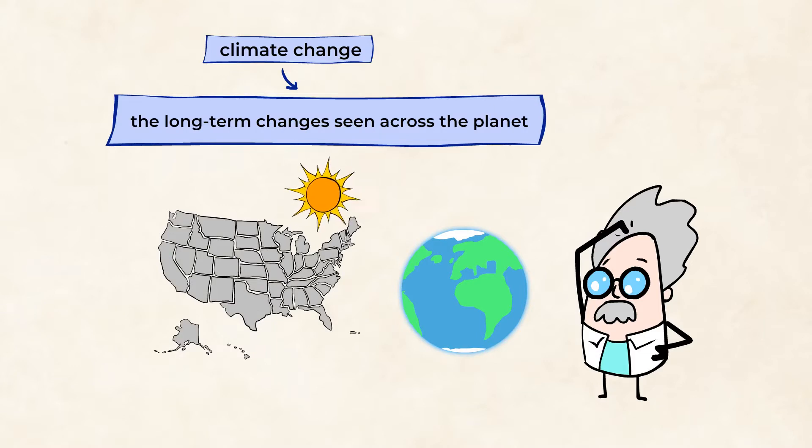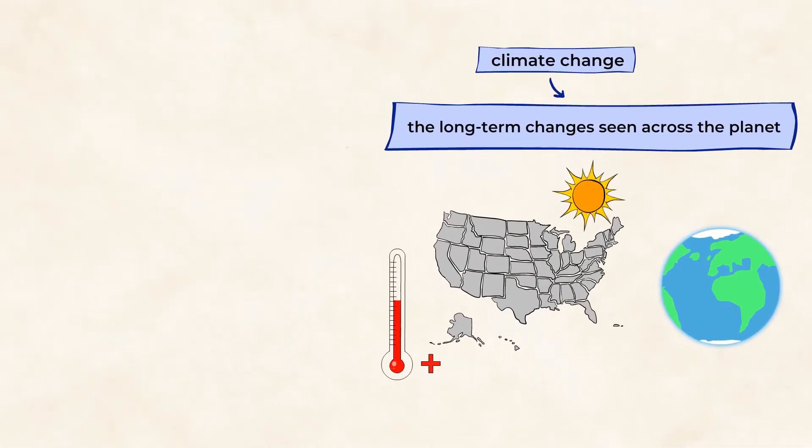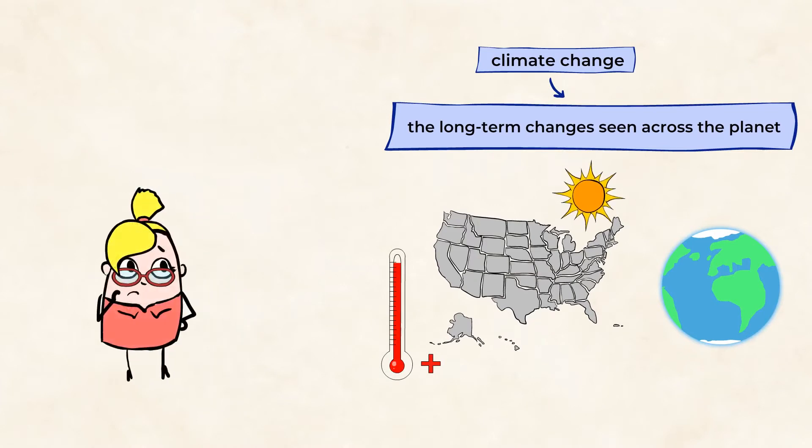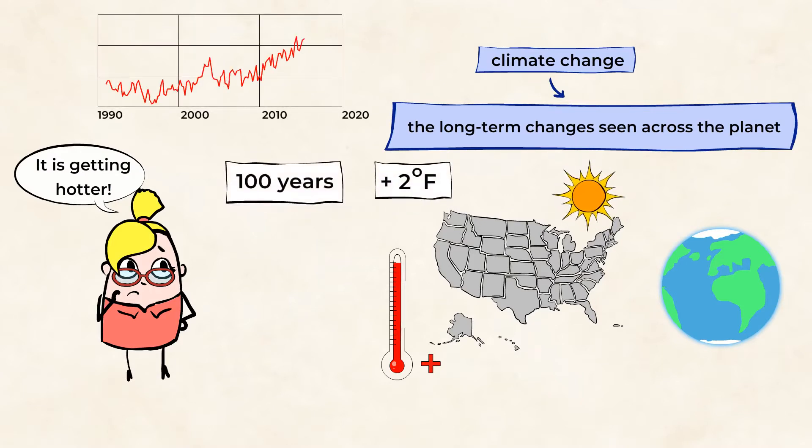Right. The Earth's average temperature has increased much more quickly in the past 150 years than it has in any given period before that. While some parts of the Earth are warming faster than others, the planet's temperature has increased by 2 degrees Fahrenheit in the last 100 years alone. That might not seem like a big deal,